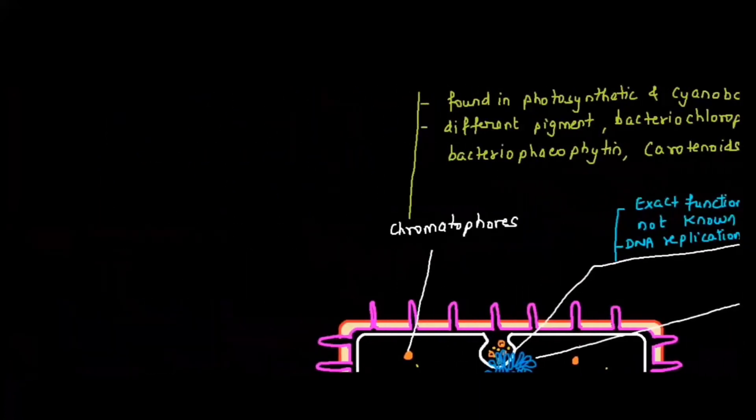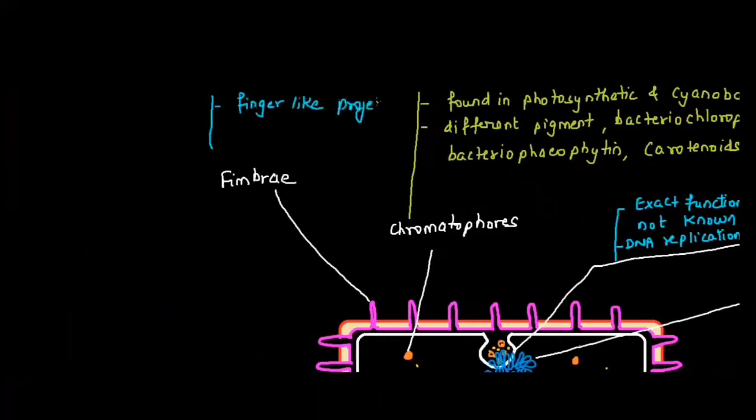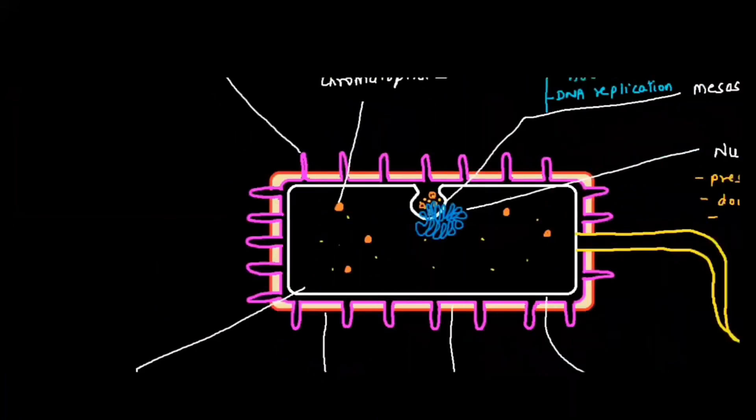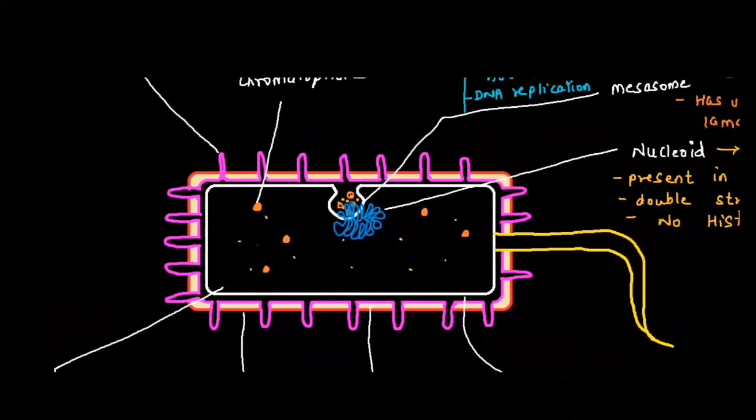When we talk about the next component of the bacterial cell, it is the fimbriae. What is fimbriae? Fimbriae is nothing but finger-like projections. What does it do? It is meant for attachment. Different bacteria attach to each other with the help of fimbriae.